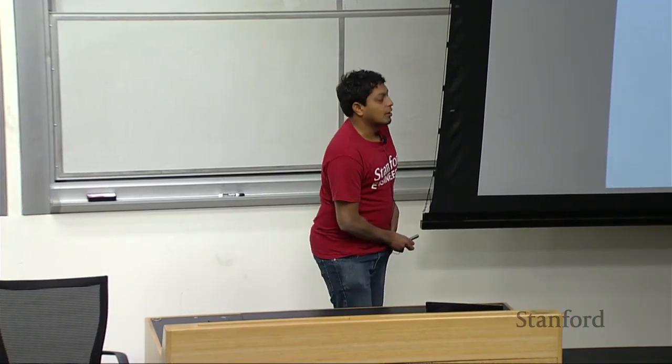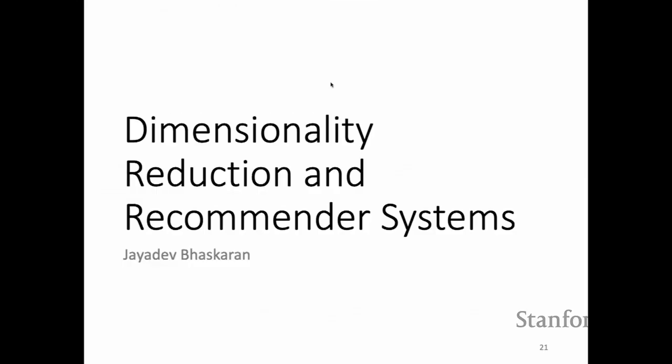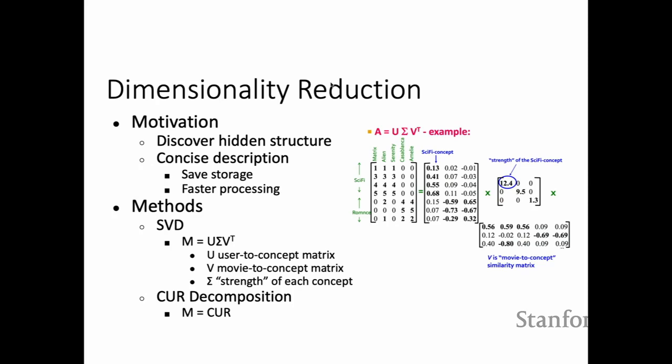I will talk about dimensionality reduction and recommender systems. Some motivations for dimensionality reduction: saving storage, faster processing, and discovering hidden structure. There are a couple of methods we discussed in class — specifically SVD and CUR, which are both different kinds of matrix decompositions.